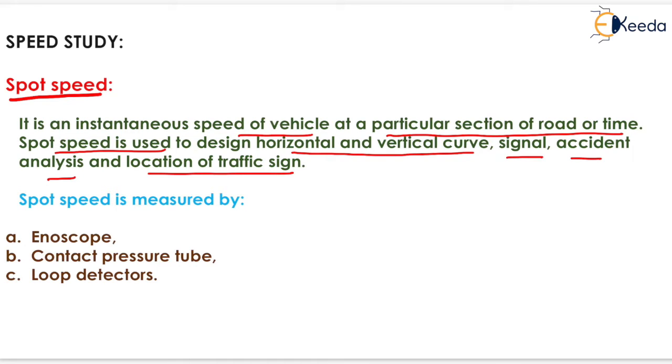We have to fix the traffic signs at such an angle so that it can be easily visible to the vehicle moving on that road. Now spot speed is measured by instruments known as enoscope, contact pressure tube, and loop detectors.